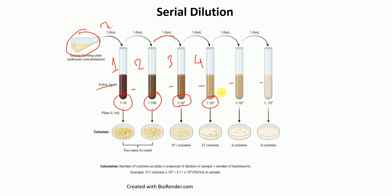In tube number 6, we take 1 ml from tube number 5, and with 9 ml of media already present, the dilution is 1 to 10 to the power 6.